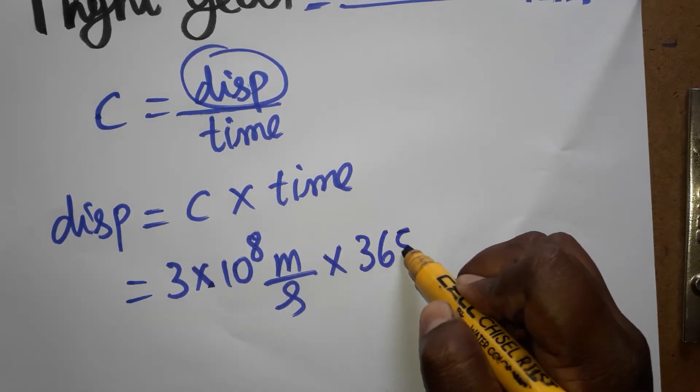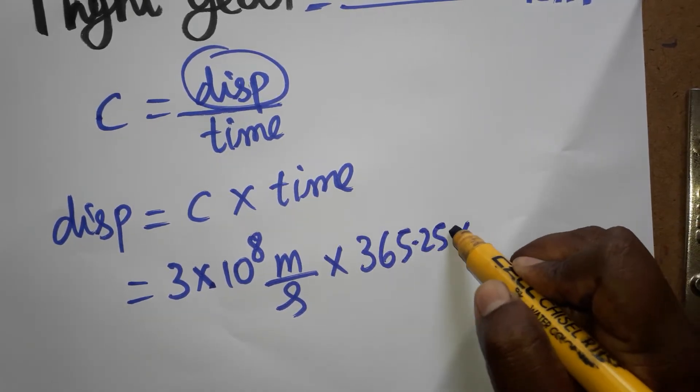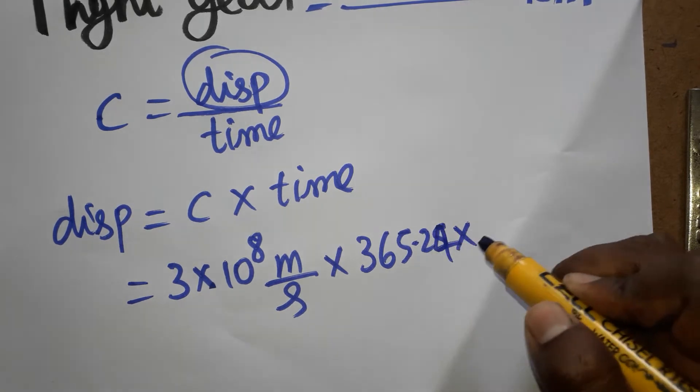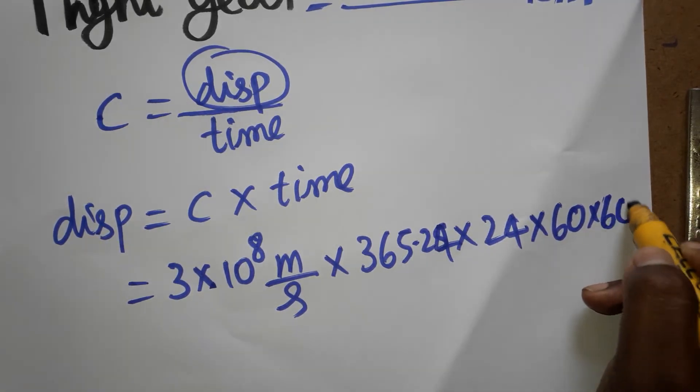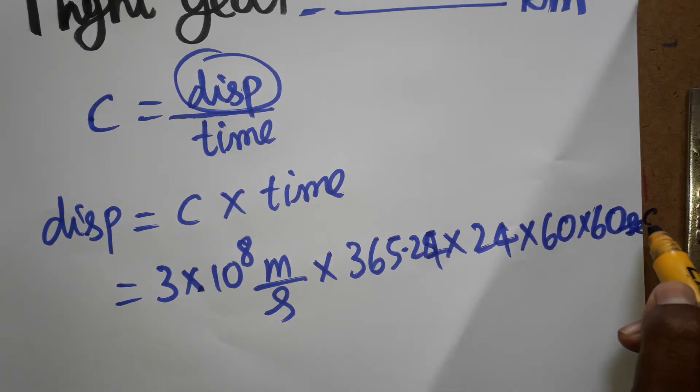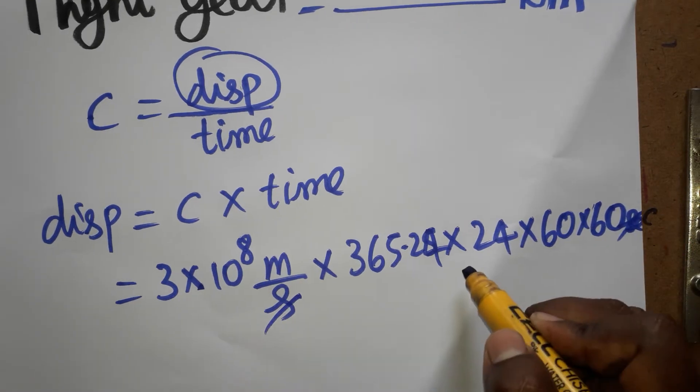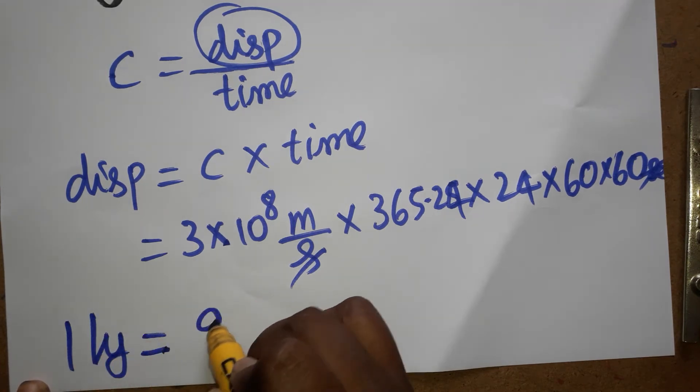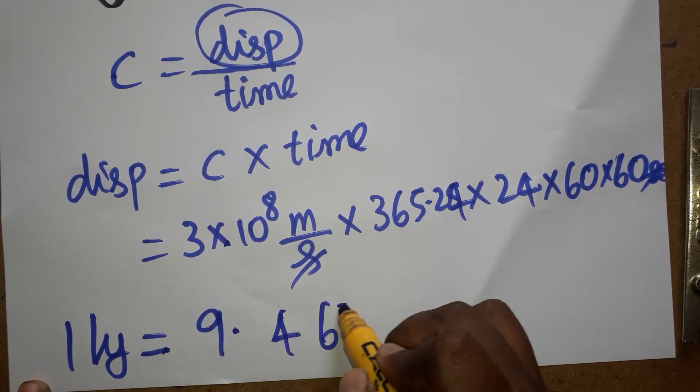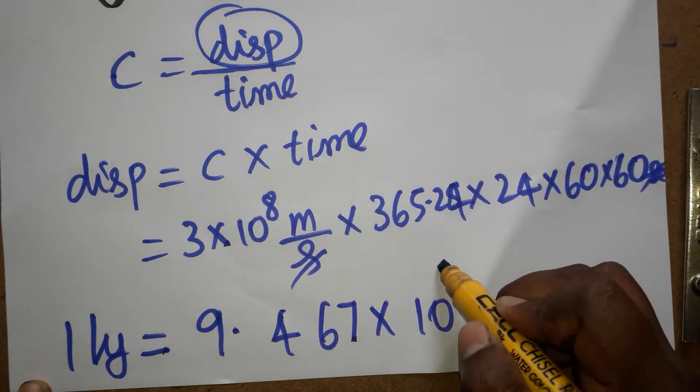Into 24 hours into 60 into 60 seconds. Second second gets canceled, this is going to represent in meter. So one light year is equal to 9.467 into 10 power plus 15 meter.